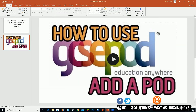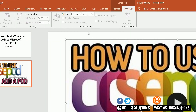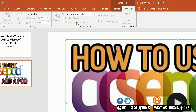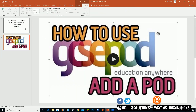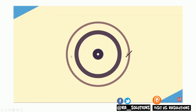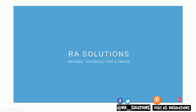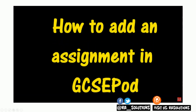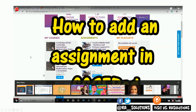The video is playing after clicking, but I want it to play automatically as soon as the slide appears. To do this, highlight the video, then go up to the Playback tab in the ribbon. Under Video Options, change the dropdown from 'In Click Sequence' to 'Automatically.' Now when I go back to the first slide and enter slideshow mode, the video should play automatically.